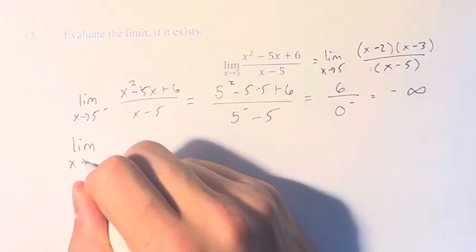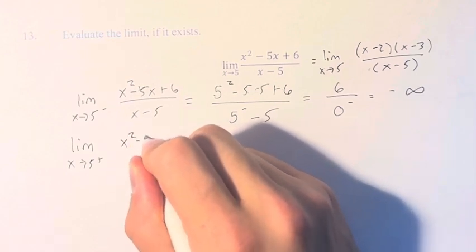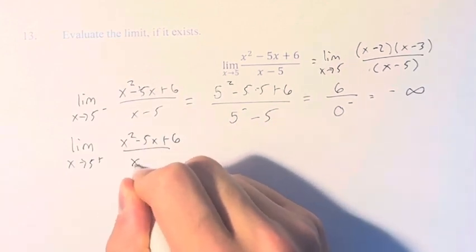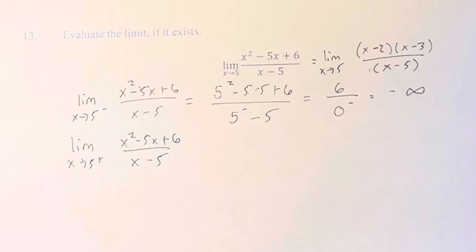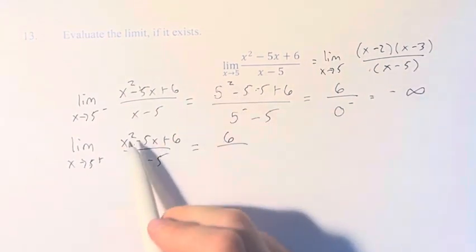If we take the limit as x approaches 5 from the right of x squared minus 5x plus 6 over x minus 5. Again, we can just plug in 5 directly up top to get 6, right? This is all just the same.